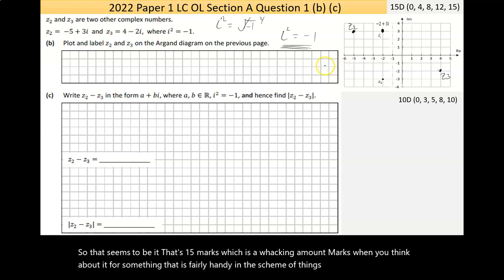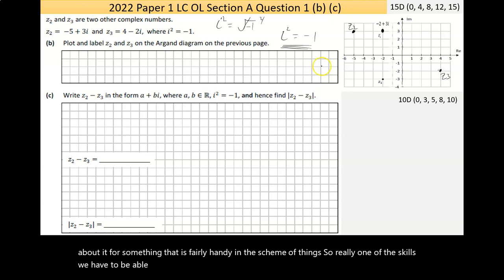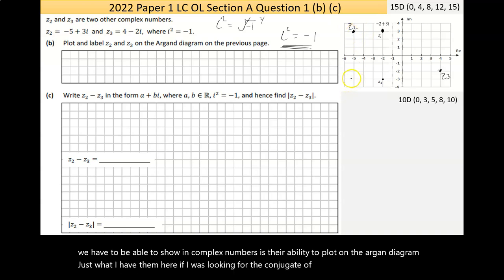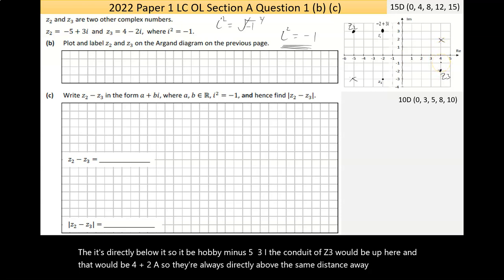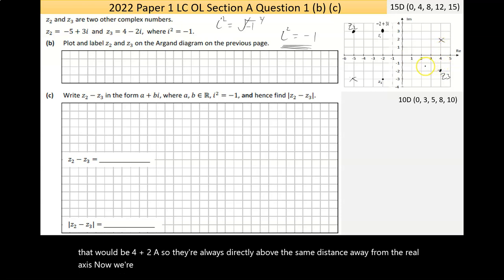Now we're looking here to plot Z2. So it's negative 5 on the real axis and plus 3i on the imaginary axis. So that's Z2. I should label it as well. And then Z3 is 4 on the real axis, negative 2i on the imaginary axis, and that's Z3. That's 15 marks, which is a whacking amount of marks when you think about it for something that is fairly handy in the scheme of things. Really one of the skills we have to be able to show in complex numbers is our ability to plot on the Argand diagram.